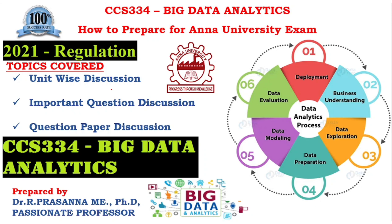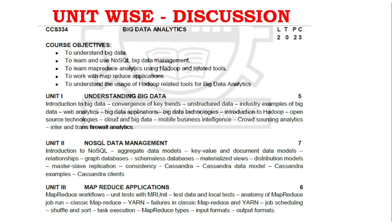We will start with unit-wise discussion. In Unit 1 - Understanding Big Data - we cover what is big data, its applications, and basic concepts. Key confirmed topics for Part B and Part C include information about big data, cloud and big data, crowdsourcing analytics, and inter and transpiral analytics.